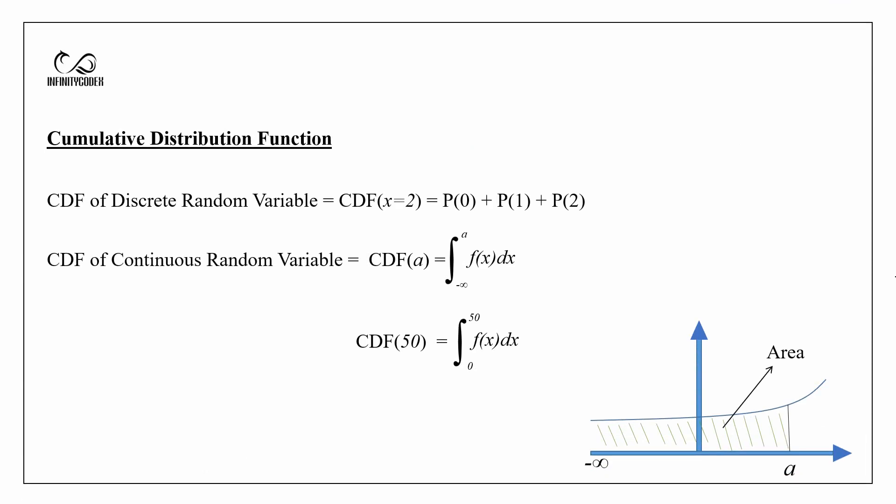As we saw the cumulative distribution function of a discrete random variable, now we will see the cumulative distribution function of a continuous random variable, which will look something like this: the integration from the least value up to the value we want of the given function f(x) dx. The graph of this function will look something like this.